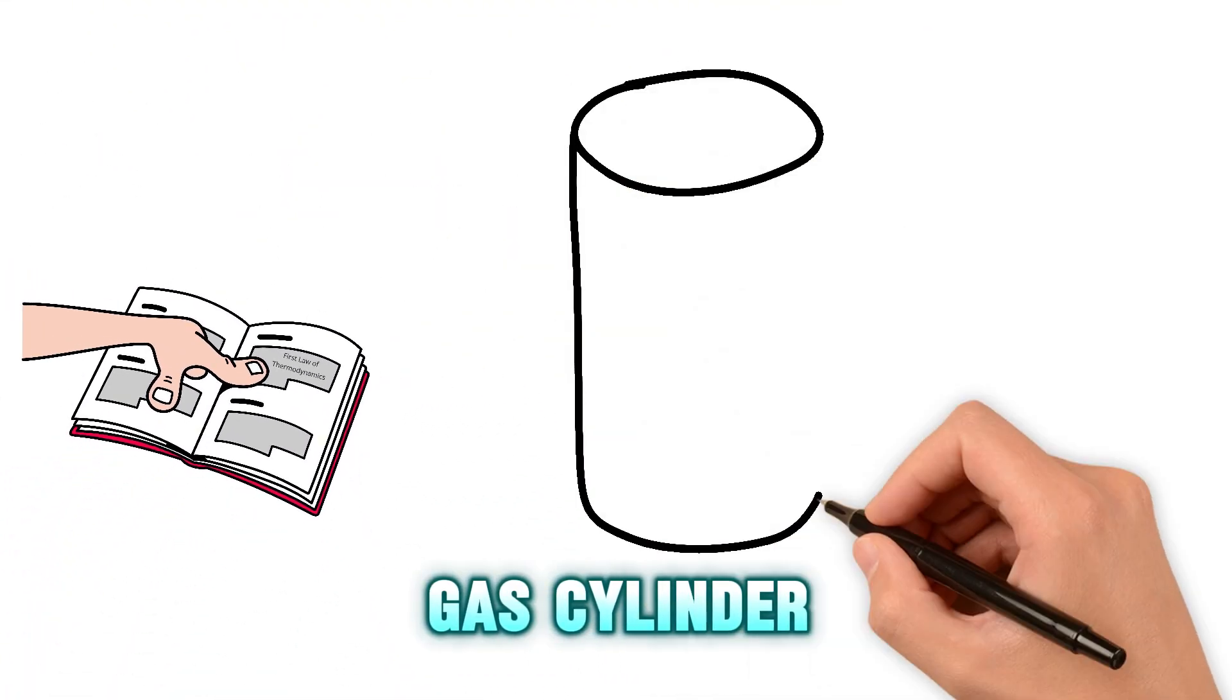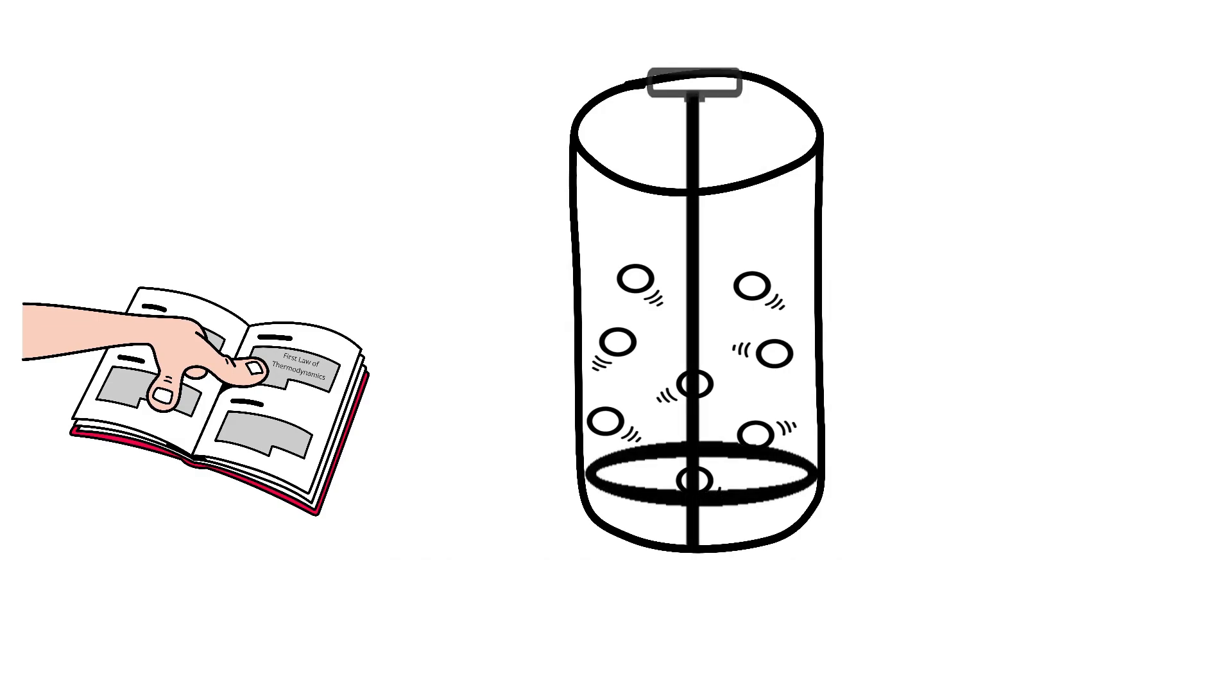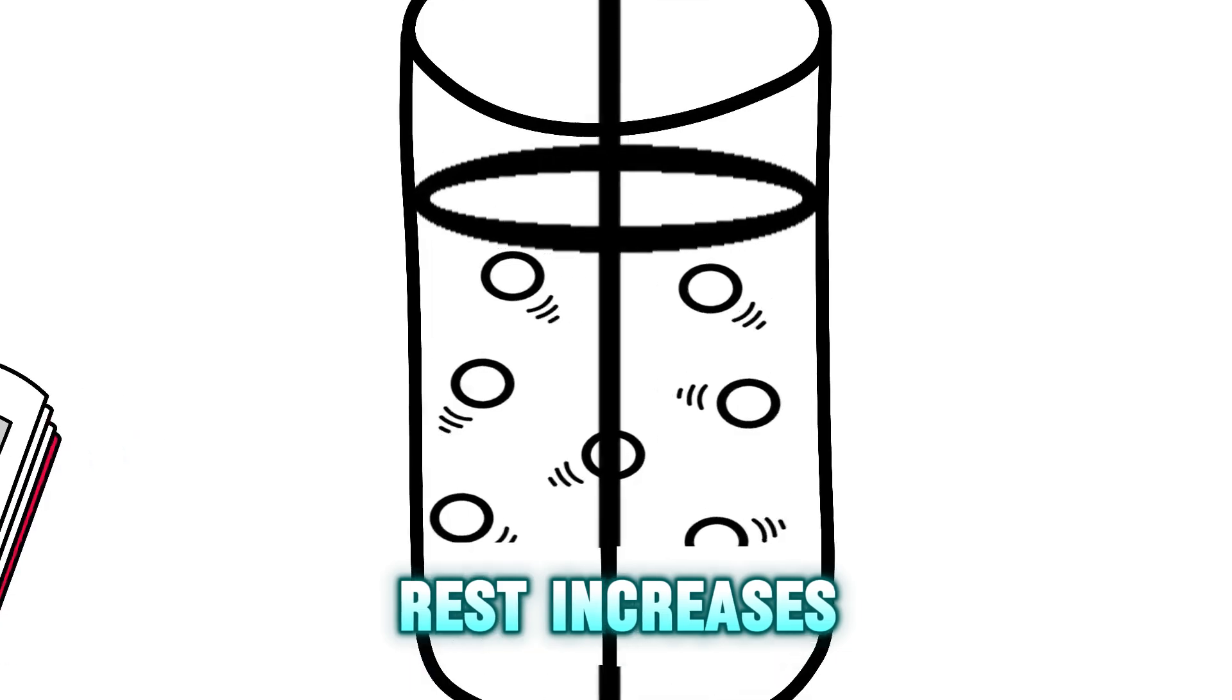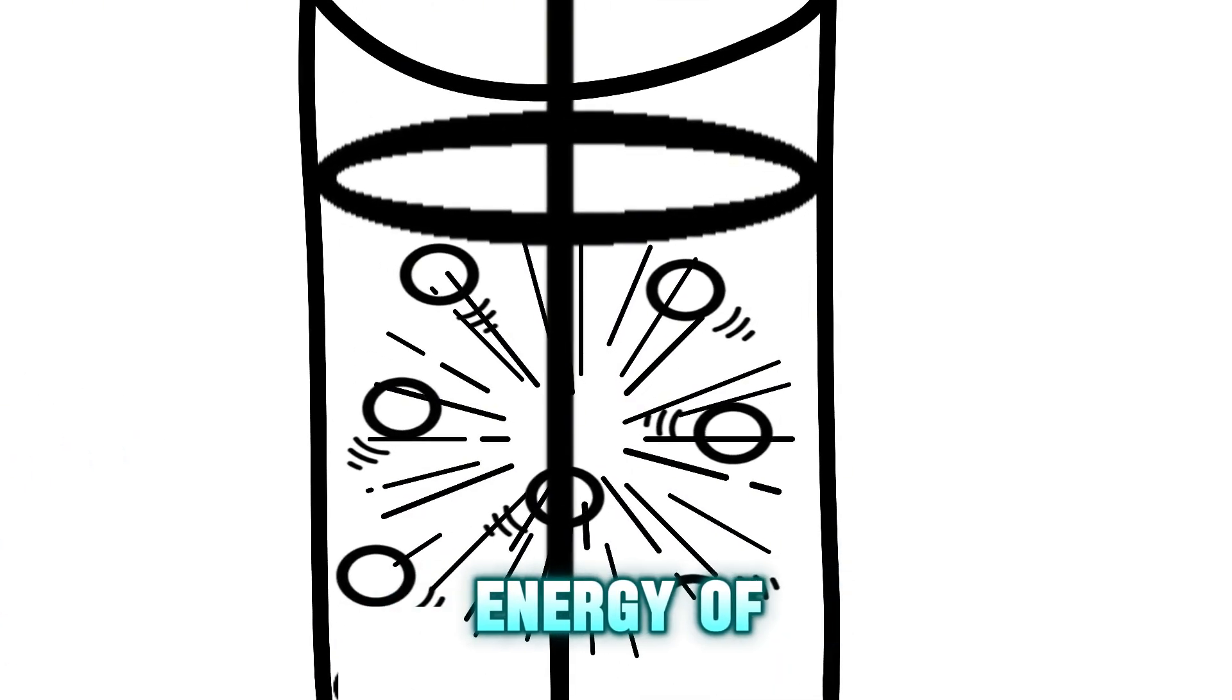Imagine we have a gas cylinder with a movable piston. When we add heat to the gas inside, that energy doesn't just vanish. Some of it goes into doing work, like pushing the piston upward. And the rest increases the internal energy of the system.